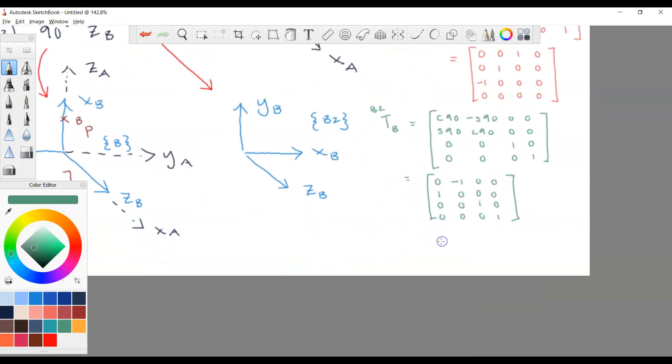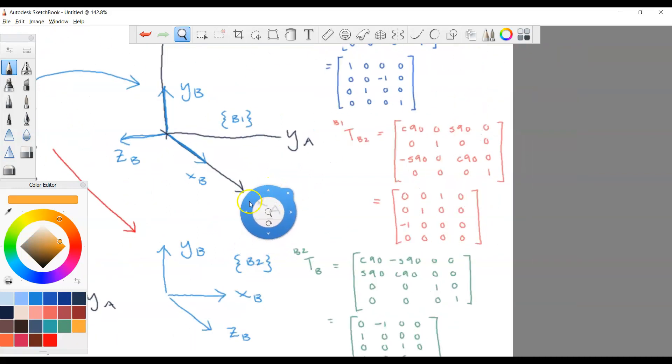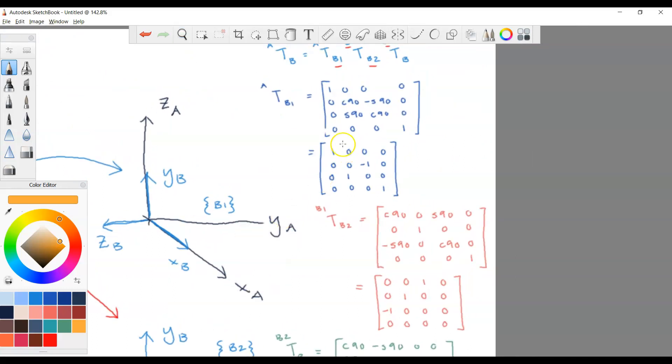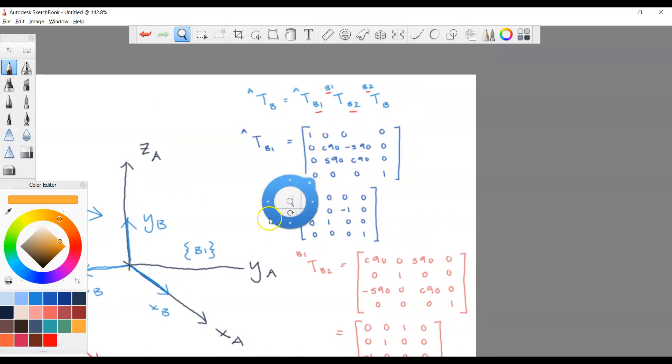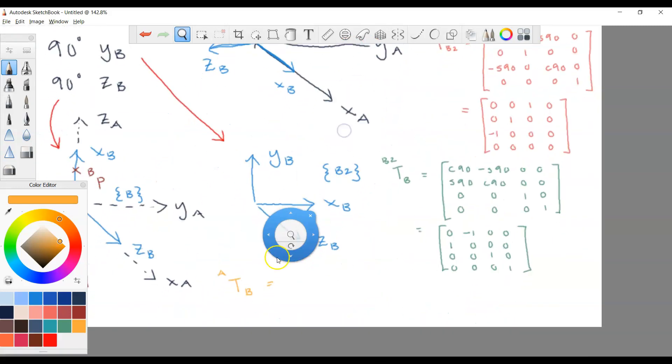So if you multiply the three, since I'm running out of space, I will leave this as an exercise for you. So what is TBA? So once again, you have to multiply the three matrices that we have just developed. Then you multiply them together, you should be getting...